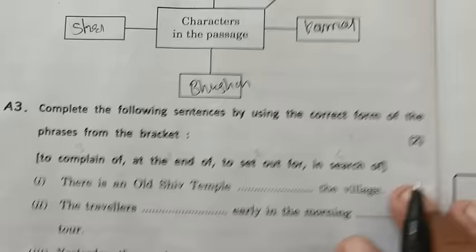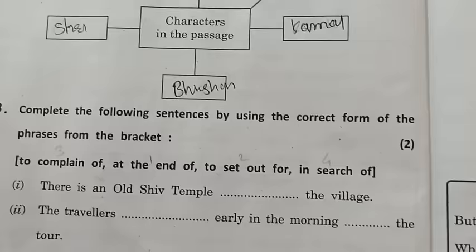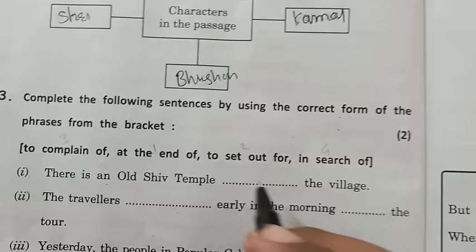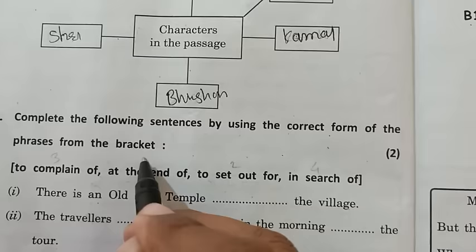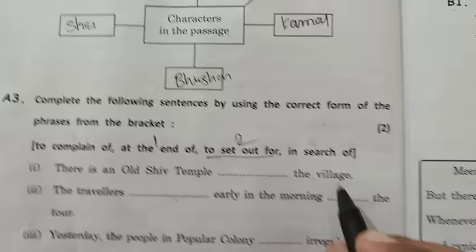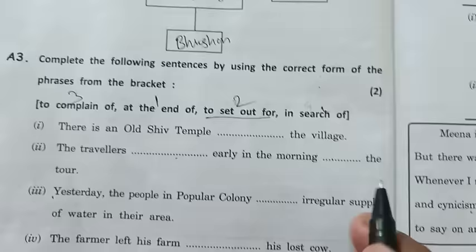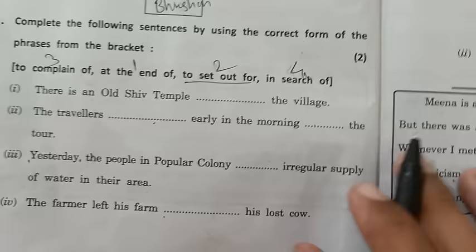Now filling the blanks — there are five blanks to fill. 'There is an old temple at the end of' — that is blank one. 'The travelers set out' — we write here for blank two. 'In search of' — blank three. 'Yesterday the people in popular colony to complain' — that is blank three. 'The farmer left his farm in search of his lost cow' — these are the fill-in-the-blanks answers.